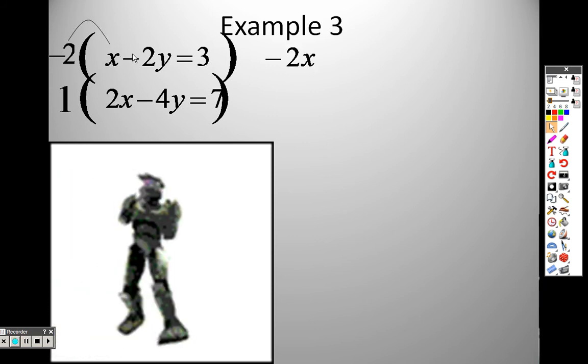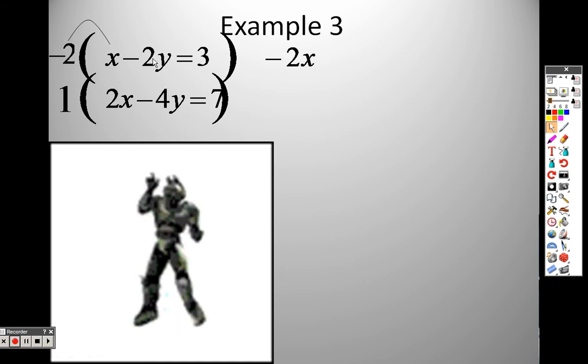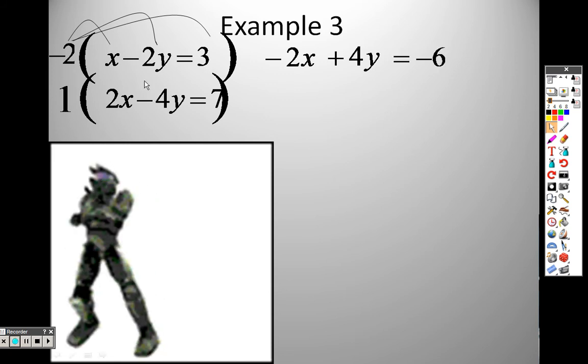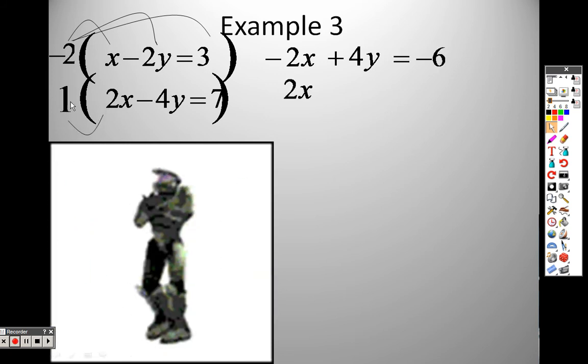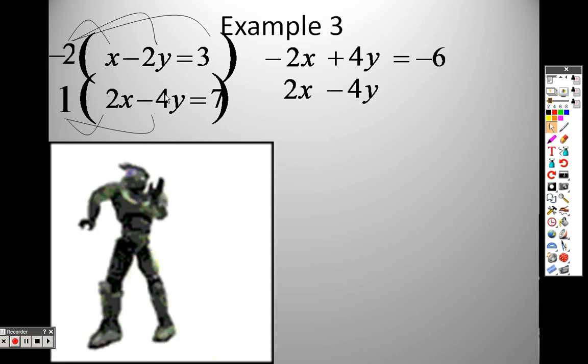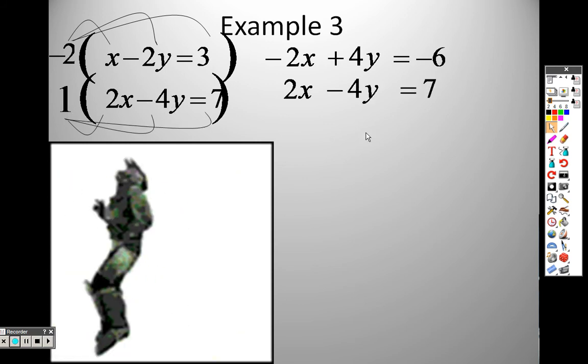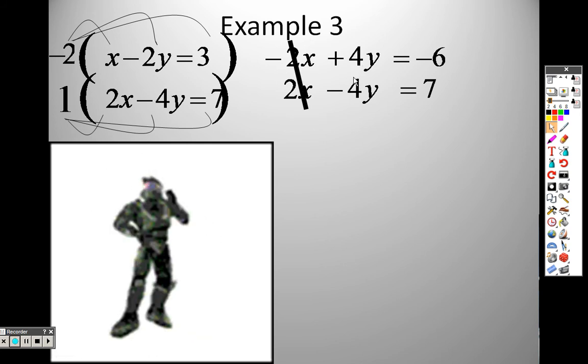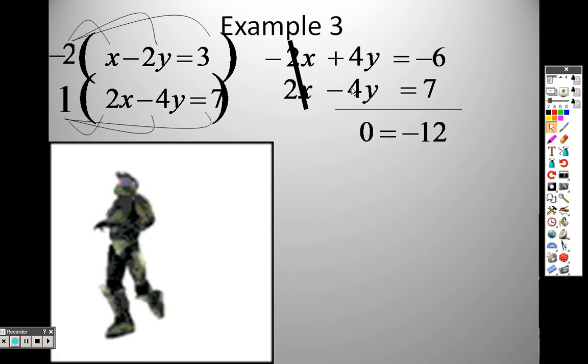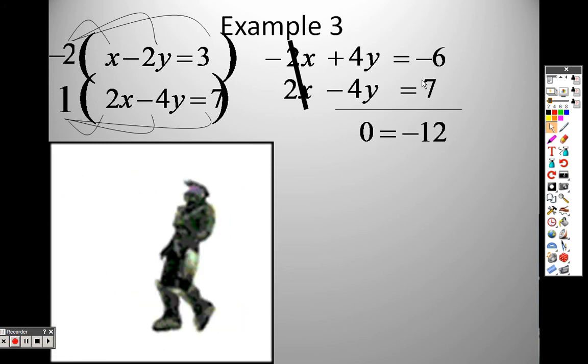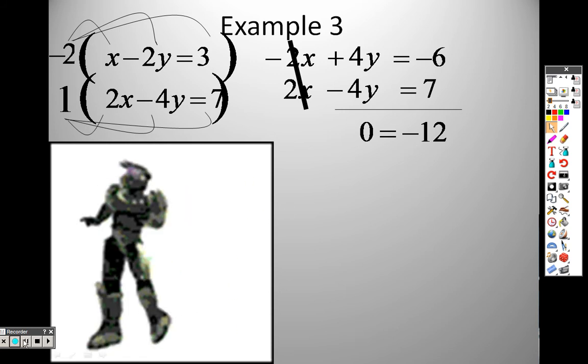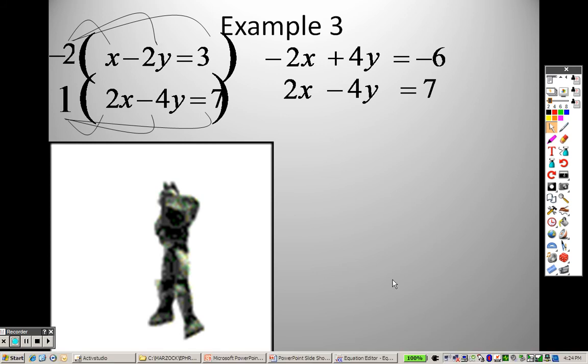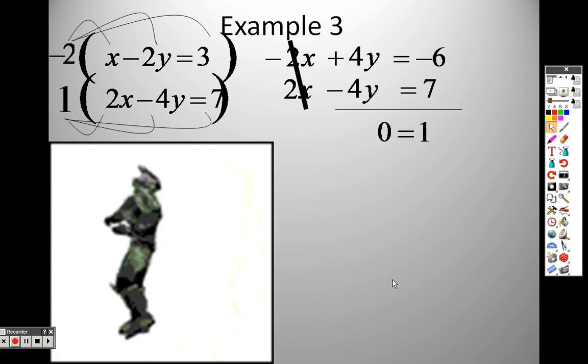Negative 2 times 1 is negative 2x. Negative 2 times negative 2 is positive 4y. Negative 2 times 3 is negative 6. On the bottom, 1 times 2 is 2, 1 times negative 4 is negative 4, 1 times 7 is 7. So when I add these up, negative 2 and 2 cancel out. When I add these up, 4 and negative 4 cancel out. I end up with 0, and when I add those two together and we realize they both cross out, I end up with 0 equals 1.